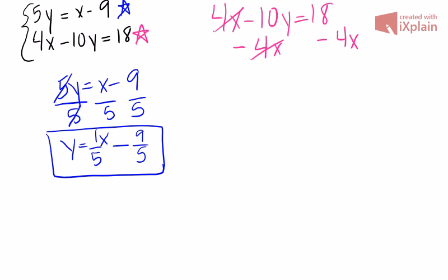4x minus 4x cancels on that side. So we get negative 10y equals negative 4x plus 18. Now we're multiplying y by negative 10, so the opposite is division. We're going to divide everything by negative 10.